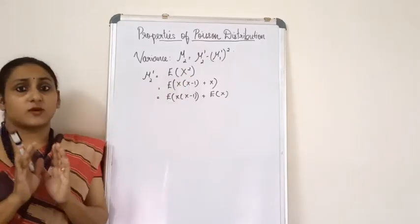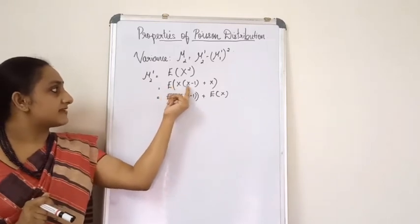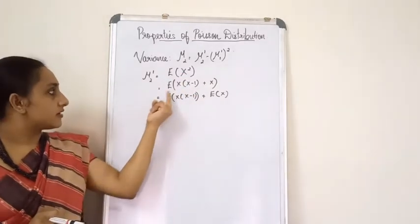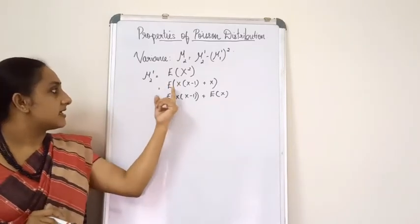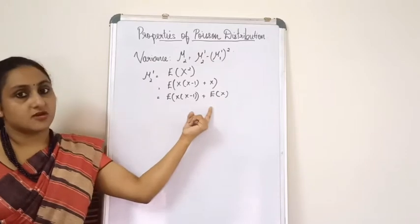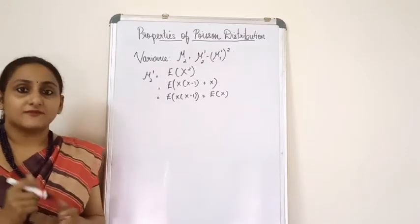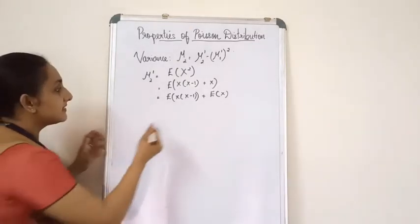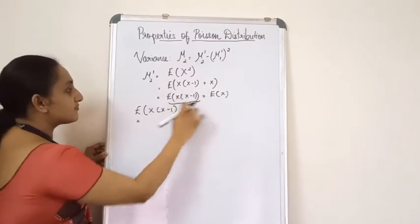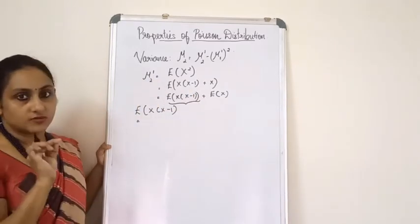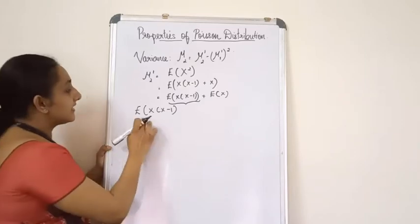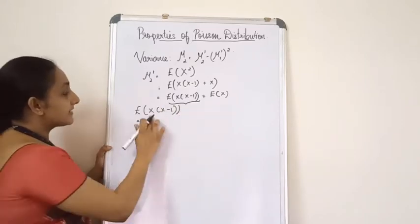I rearrange x² as x(x−1) + x. By the additive property of expectation, E[X²] = E[X(X−1)] + E[X]. Since E[X] = λ, we only need to find E[X(X−1)] and then substitute to get μ₂'.